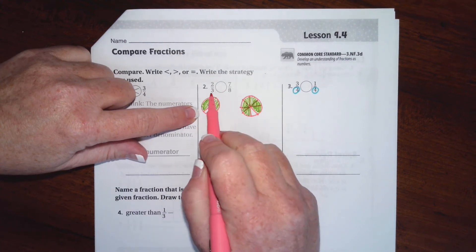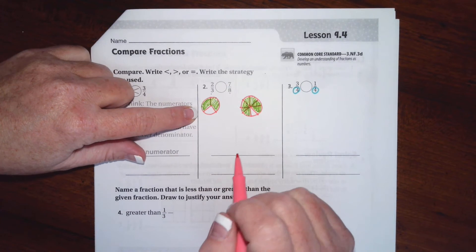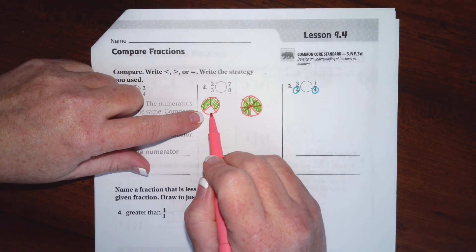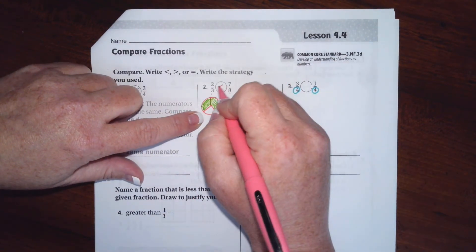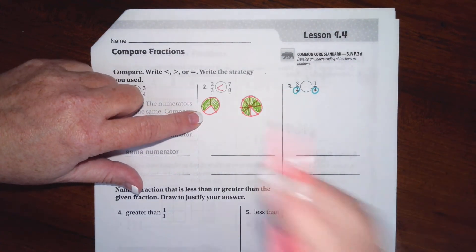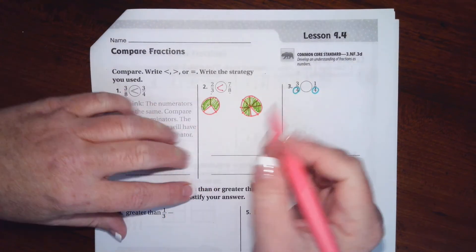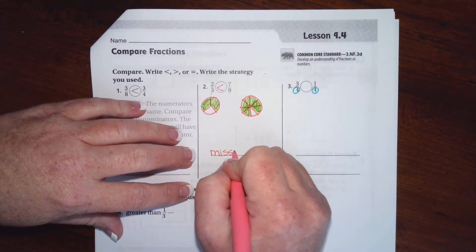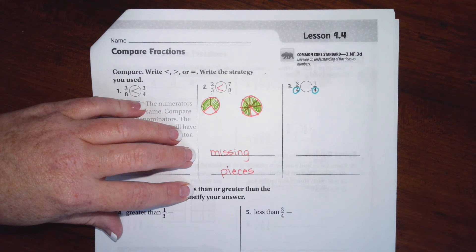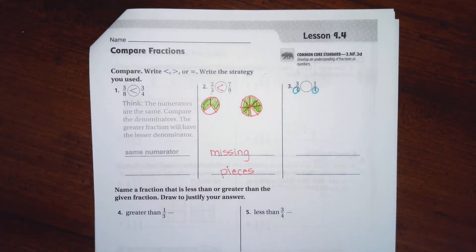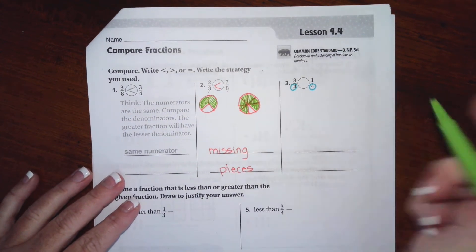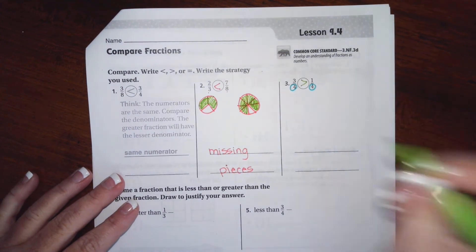You notice that this one only has three pieces because the denominator is three, and this one has eight pieces because the denominator is eight. This one has less of it colored in than that little itty bitty piece, so that one's going to be bigger. The way they're calling this is saying that this one is missing pieces, so we're literally going to write 'missing pieces.' On this one it actually has the same denominator, so finding out which one is more is easy, so we're just going to write 'same denominator.'